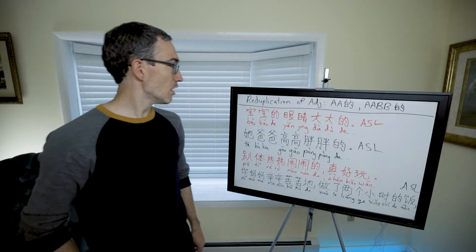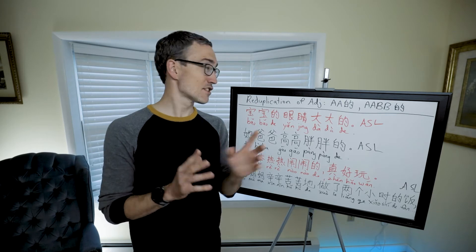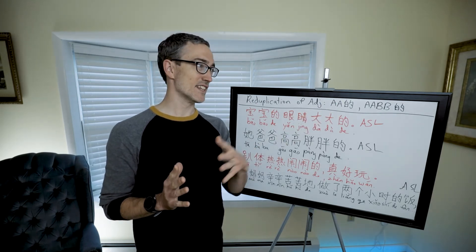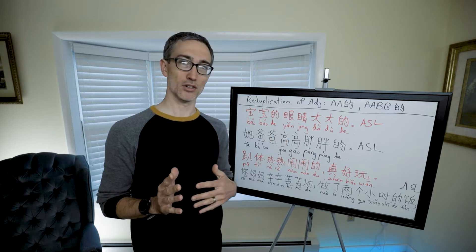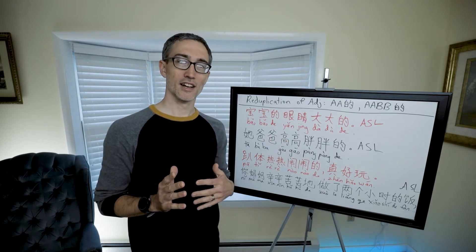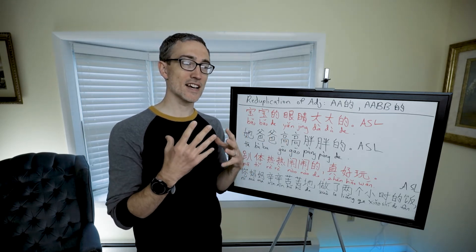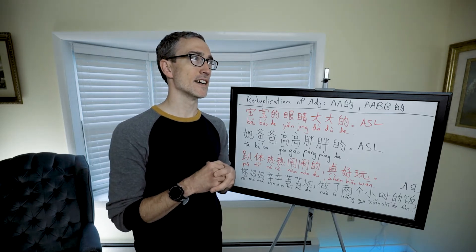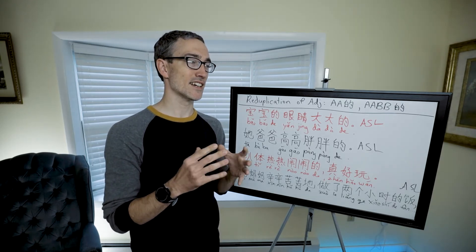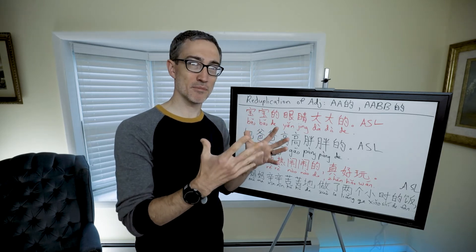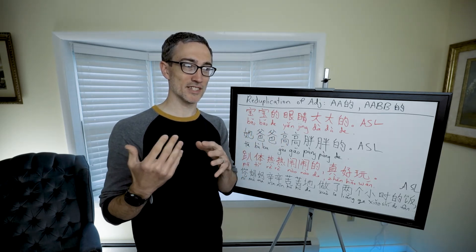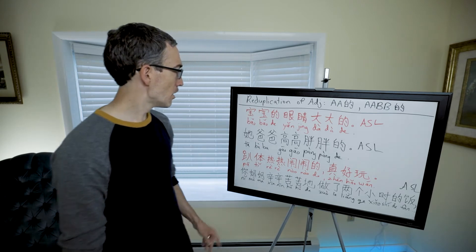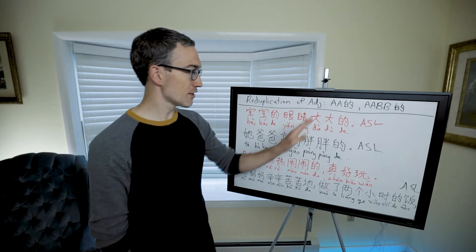Another thing: this cannot be negated. You can't say someone is 'not gāo gāo de' — 'tā bù gāo gāo de' doesn't work. That's because the phrase itself is a descriptive way to say something; it's not a way to say something is not descriptive.